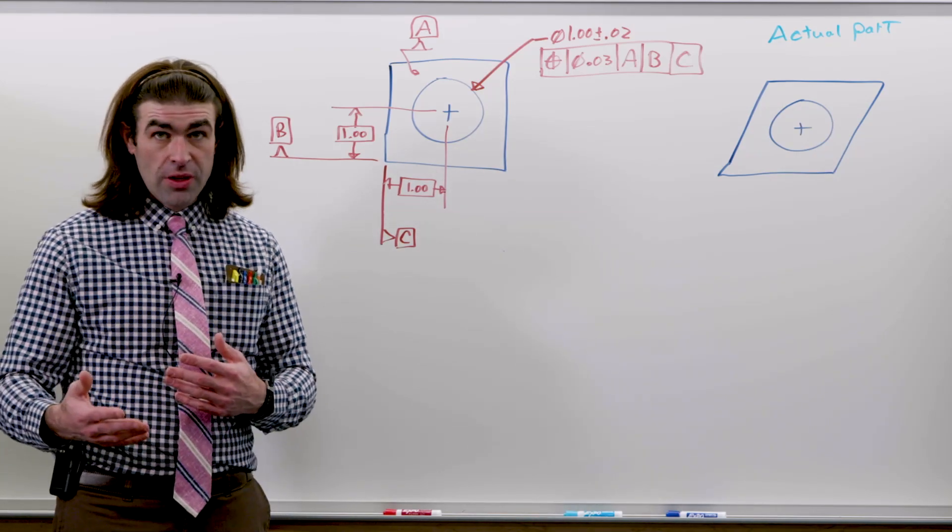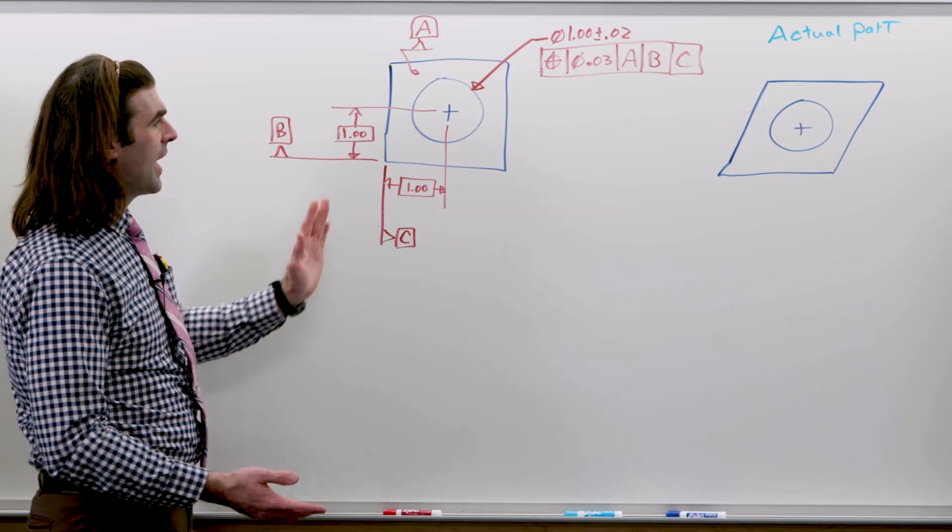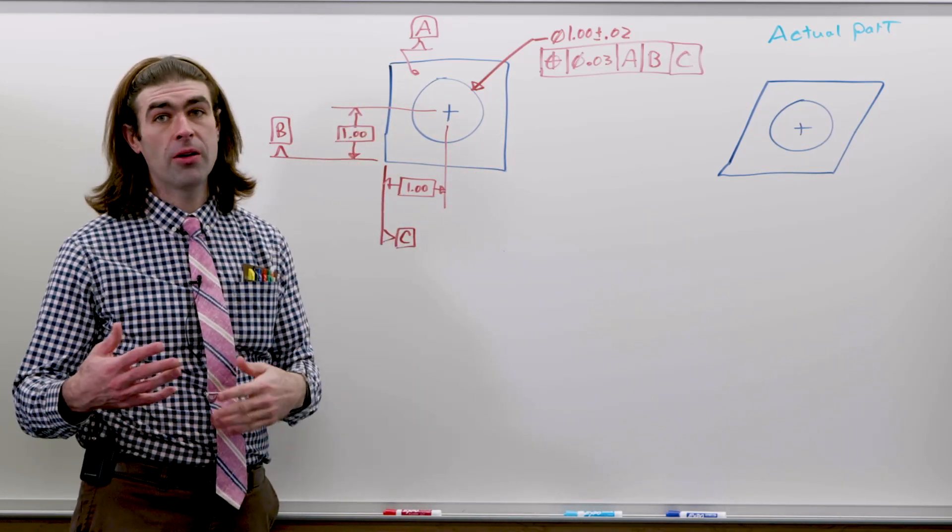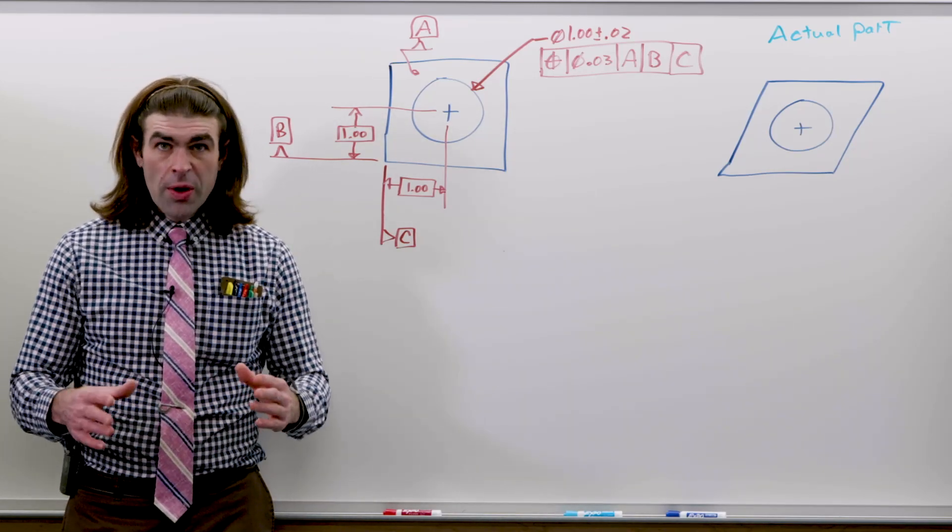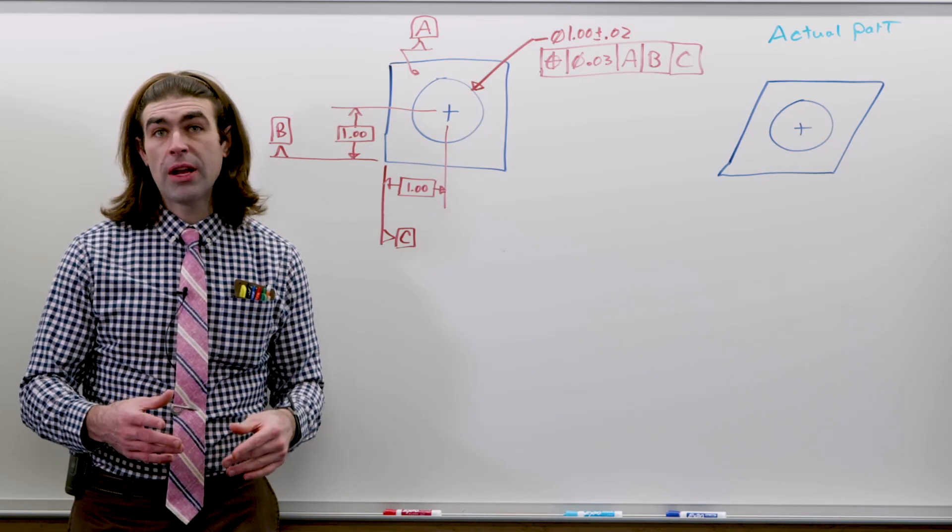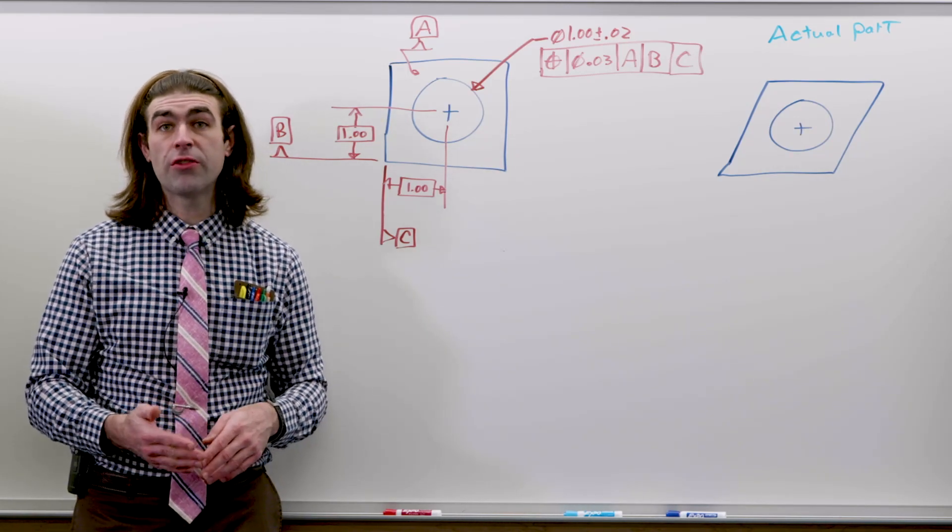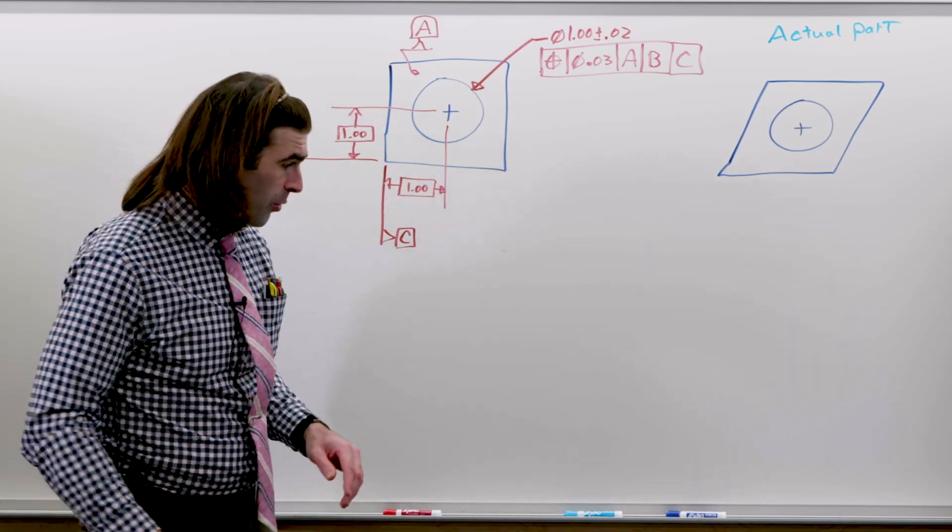Now, in order to measure this, all three need to be locked down. If we had nothing stopping this side of the part, we could move it left or right to get a better measurement. Now, the question is, where do we measure from? So we could measure from one feature to another feature, or we could measure from the datum simulator to a feature, and it makes a big difference. I'll show you why.